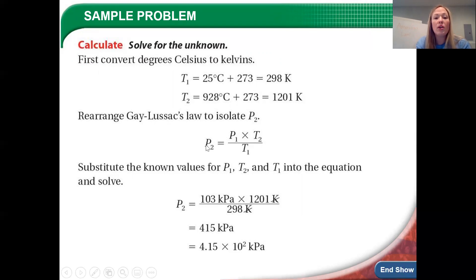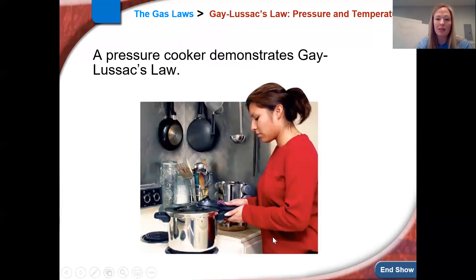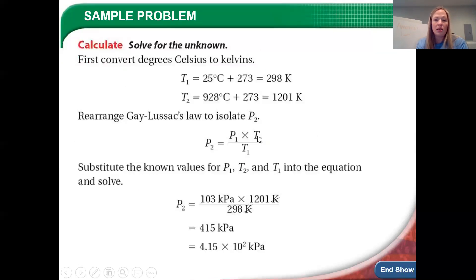Okay, so in order to get P2, if you go back to our formula here, if you're looking for P2, you're going to do P1 times T2 divided by T1, right? So P1 times T2 divided by T1, which would be 103 kPa times 1201 Kelvin. Where do we get that? Up here when we convert into Kelvin, right? And then 298 Kelvin on bottom. You do that math, and then you get 415 kPa.